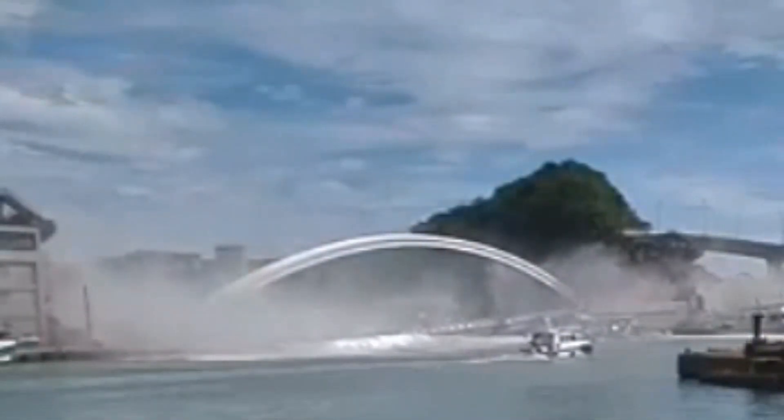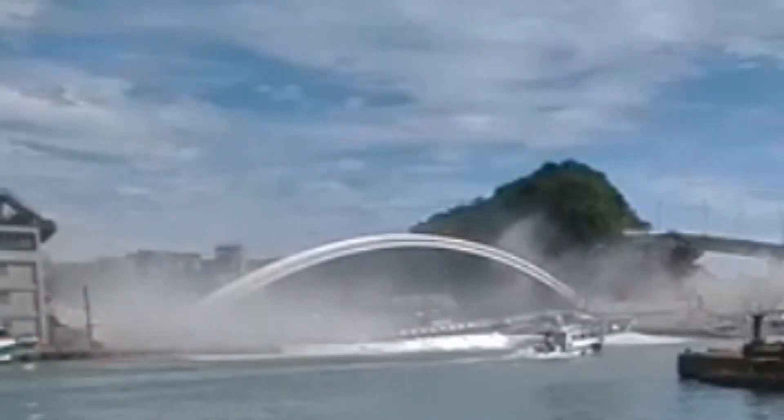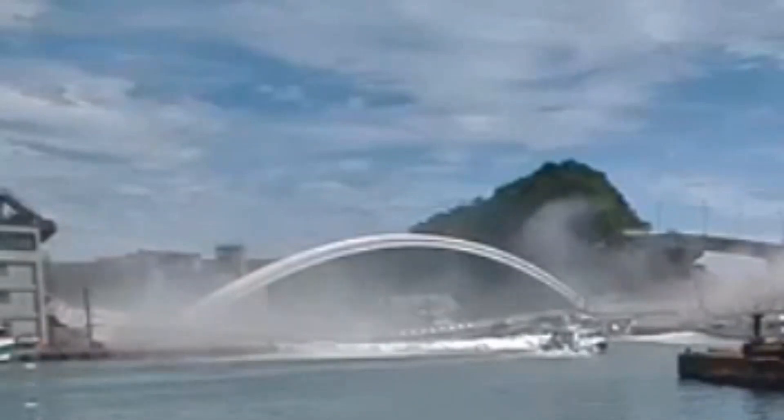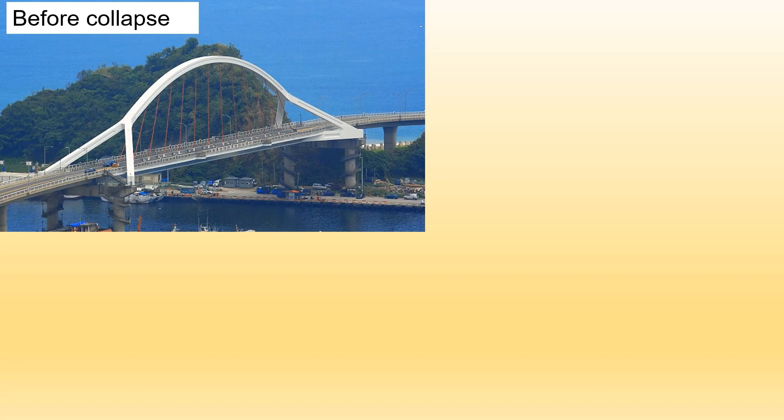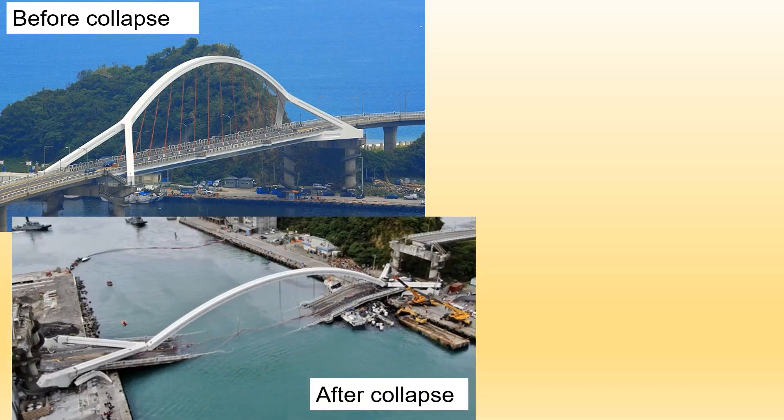This kind of failure could occur on any old cable-supported bridge. This is a beautiful bridge — the structural form is unique. The arch rib is single in the span center and branches into two arch ribs near the supports. But it collapsed. Miserable results.